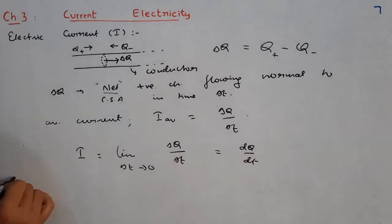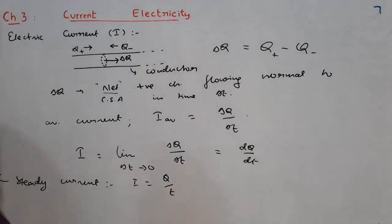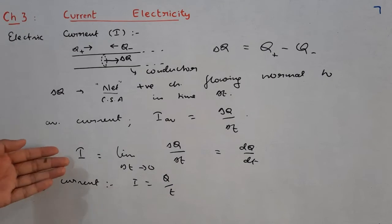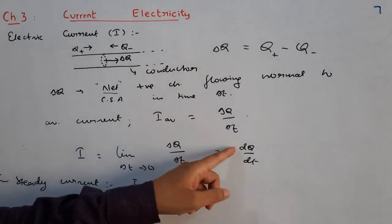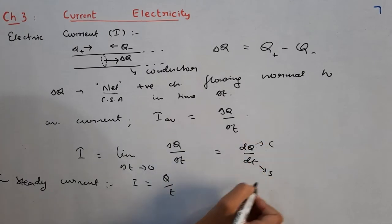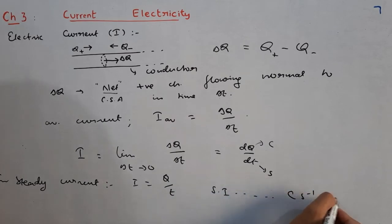If the current is steady — steady means it is not fluctuating — then for steady current we can simply write I = q / t, where q is the amount of charge flowing in time t. But if the current is fluctuating we will use average current for some interval, or we will use instantaneous current dq/dt at a particular instant. The SI unit for electric current will be coulomb per second, which we also call as ampere. So 1 ampere is 1 coulomb per second.